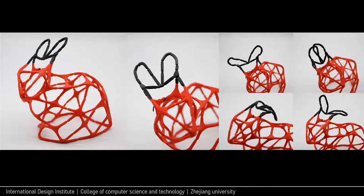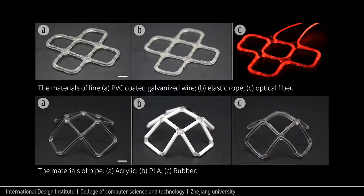For example, replacing the nodes on the bunny's ears with fully flexible nodes gives the ears a softer touch that allows deformation in more angles. More wiring and threading materials can be integrated with FlexTrust, including wire, elastic rope, and even optical fiber. For flexible types of nodes, we can largely shorten manufacture time by replacing pipe with other materials such as acrylic, PLA, or soft rubber.